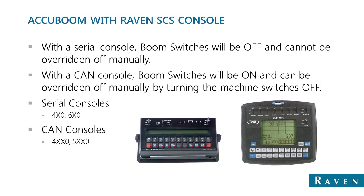For guys running an SAS console for product control wishing to control their sections, we have a few machine kits. With serial-connected SAS consoles, we run the machine switches in the off position. With CAN systems, boom switches run in the on position, which allows the operator to manually override sections. Serial-capable consoles include the 440, 450, 460, and 660. CAN consoles include the 4400, 4600, 4000, and 5000.